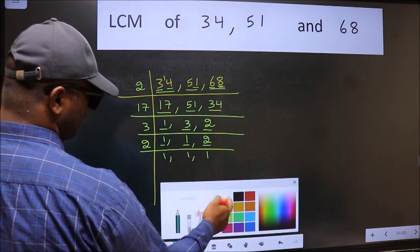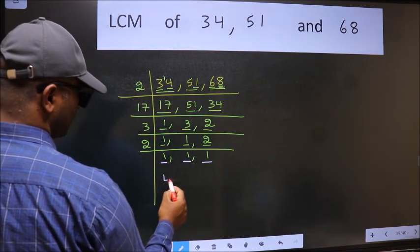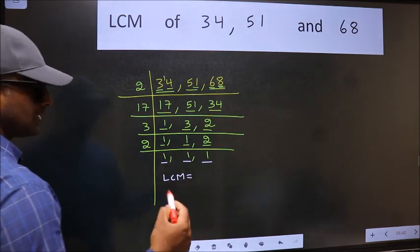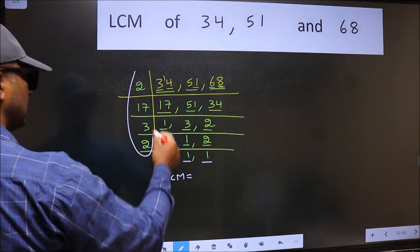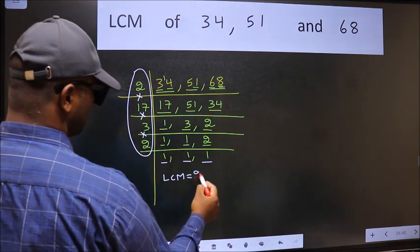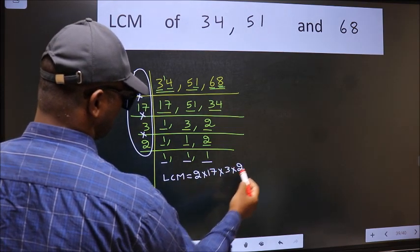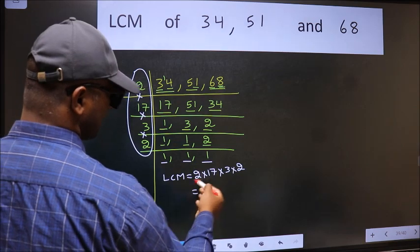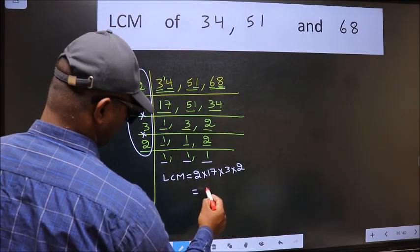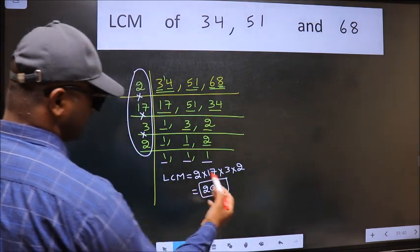So we got 1 in all three places. Our LCM is the product of these numbers: 2 times 17 times 3 times 2. When we multiply these numbers we get 204 as our LCM.